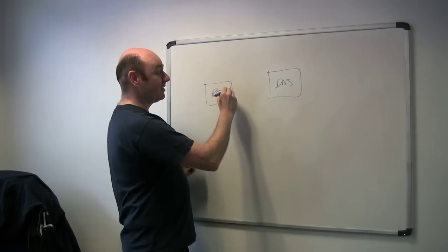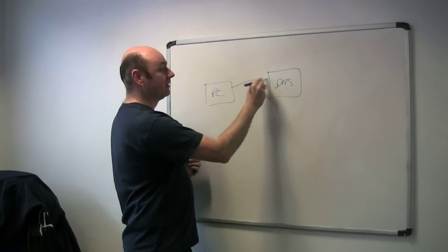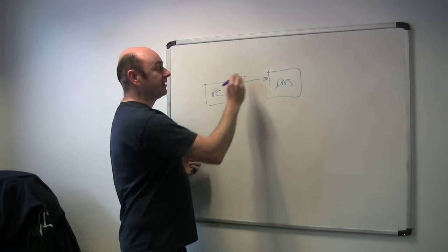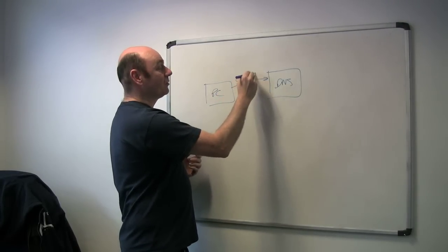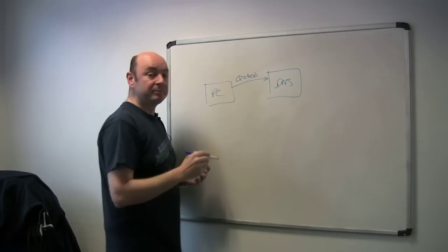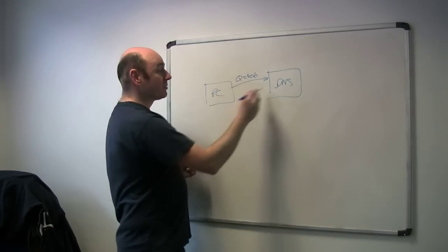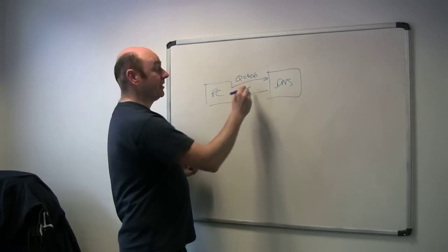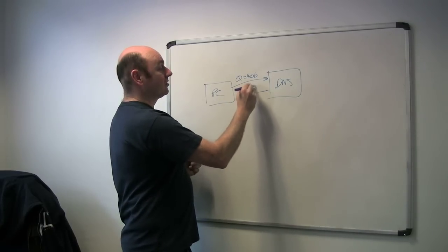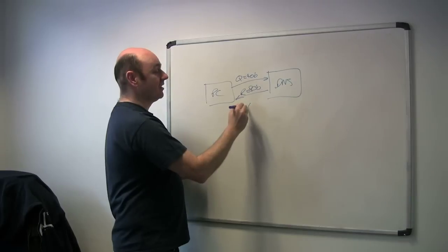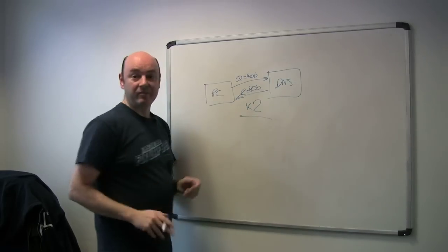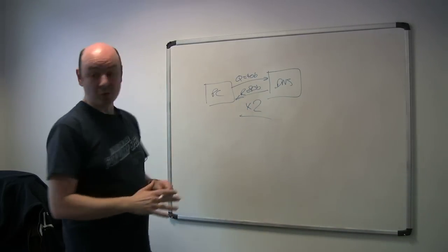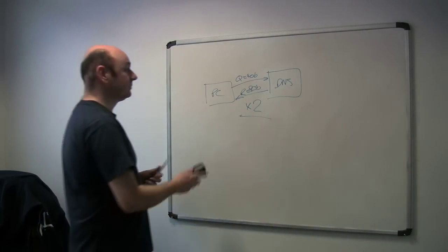For instance, a PC will send a query to a DNS server — that query could be around about 40 bytes, and the response that comes back could be something like 80 bytes. So straight away you can see we've got an amplification factor of times two. That's just with normal standard DNS behaviour.